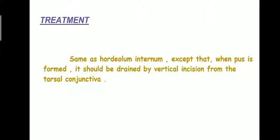Treatment is the same as hordiolum externum, except that when a pus point is formed, it should be drained by vertical incision from the tarsal conjunctiva. Why vertical incision? This is because the meibomian gland ducts run vertically. If we give a horizontal incision in the tarsal conjunctiva, we will injure the meibomian gland ducts — that is why the incision should be given vertically.